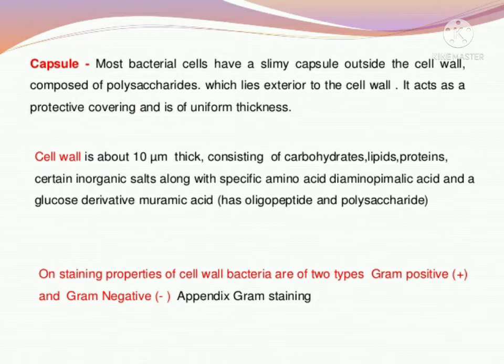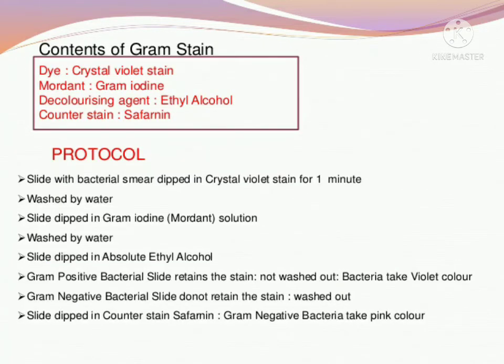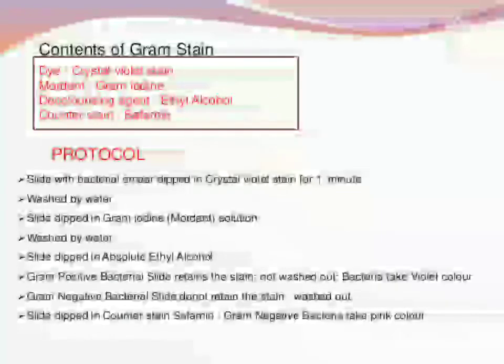Generally, cell walls are made of two components: one is cellulose and chitin — specific amino acids like diaminopimelic acid, glucose derivatives, and muramic acid. This is a characteristic feature. If there is gram positive bacteria, then teichoic acid will be present. In gram negative bacteria, mycolic acid will be present. Gram staining is the mechanism we studied in the Monera Kingdom.